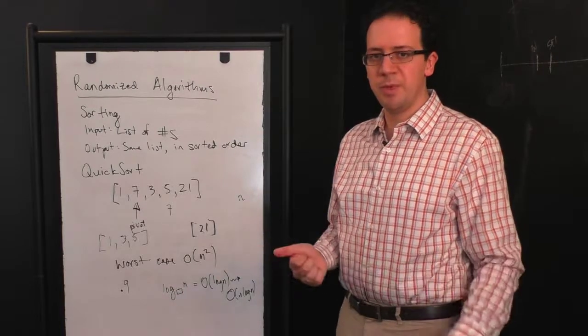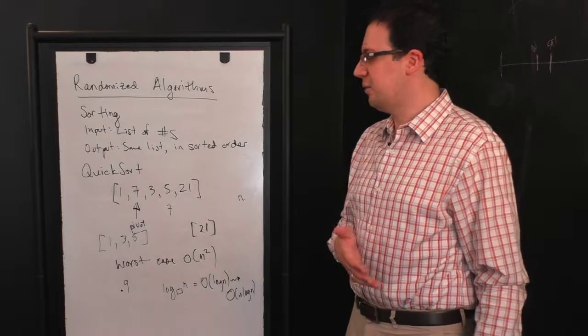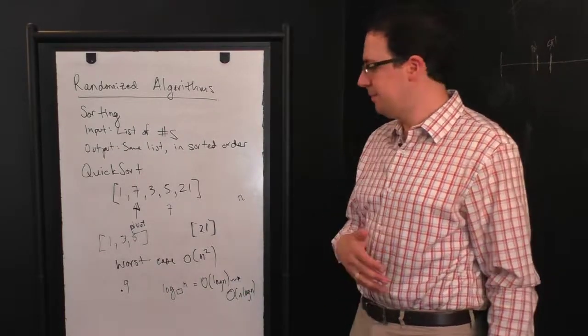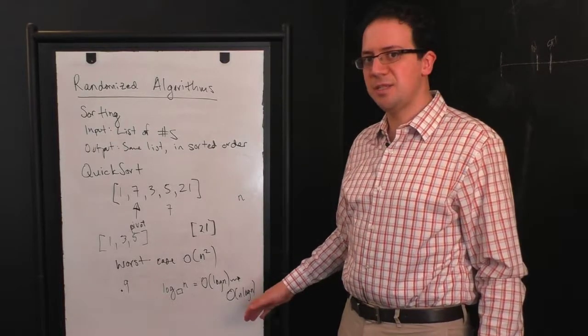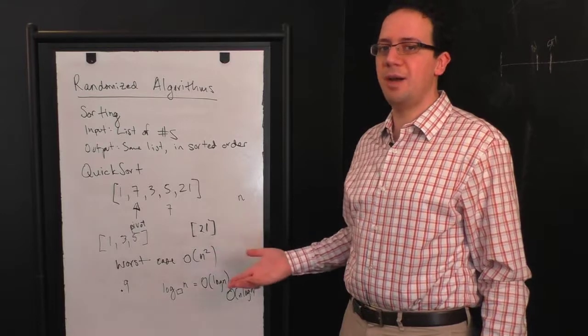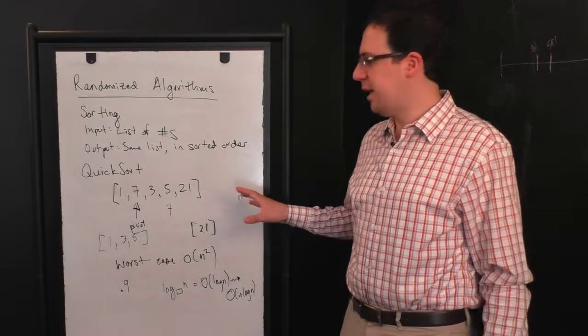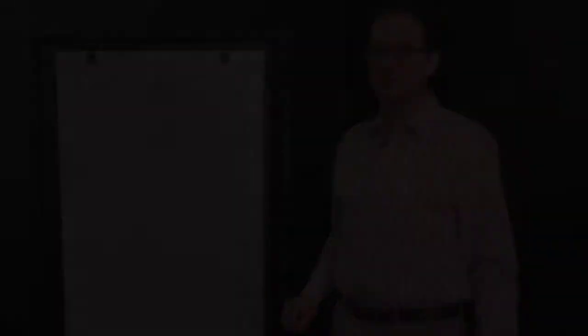You want it to be simple because if the deterministic algorithm was simpler, you might as well use the deterministic algorithm. You want it to be fast because if the deterministic algorithm is faster, you might as well use that. And you want it to work and be fast with some sort of guaranteed high probability. So this is our first example of a simple, fast, correct, with high probability randomized algorithm.